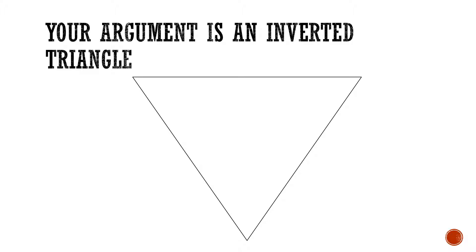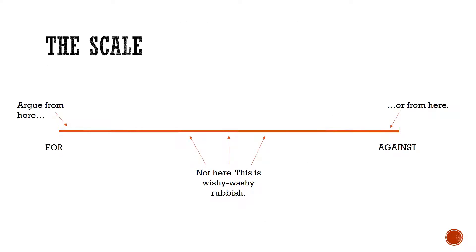Your argument is like an inverted triangle. You start by engaging the reader and end with your message. If you do it the other way around, you'll run out of things to say and just ramble on. Think of a scale: you are going to either argue for — completely, unbelievably, totally agreeing with the statement — or against, which is completely, unbelievably, totally disagreeing with it. Don't do a bit of both. It's much more likely to go wrong. When deciding, just go with your gut feeling — you'll have more ideas and opinions.